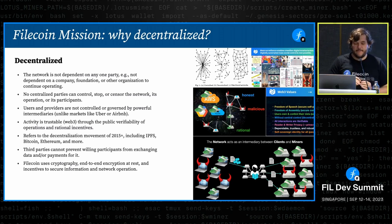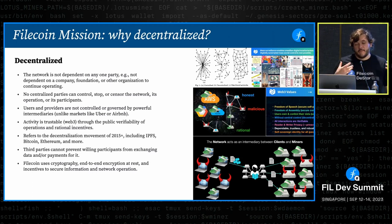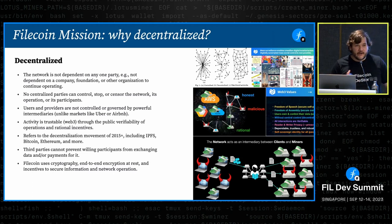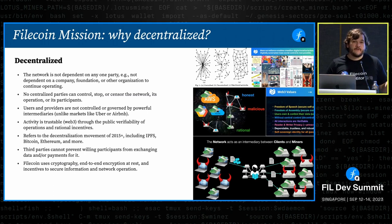Why decentralized? Why do we need a decentralized storage network, and what do we mean by decentralized? What we want is a network that is not controlled or dependent on any one party — a self-standing structure on the internet based on cryptoeconomic incentives that can organize a large-scale number of participants into providing an open service. No party should be required; any party could be swapped out. No one should be able to control, stop, or censor the network. As long as willing participants meet in the network and want to exchange data, they should be able to do that.